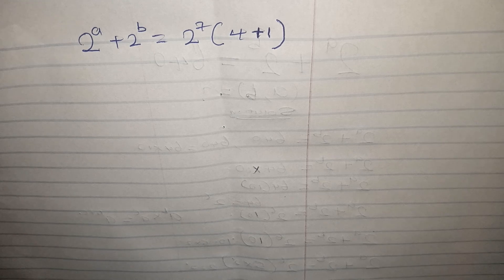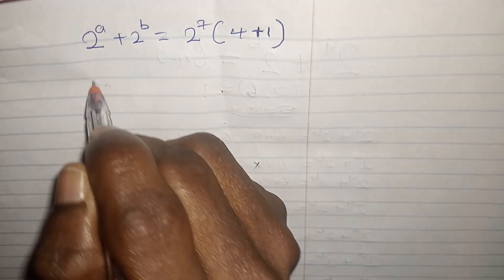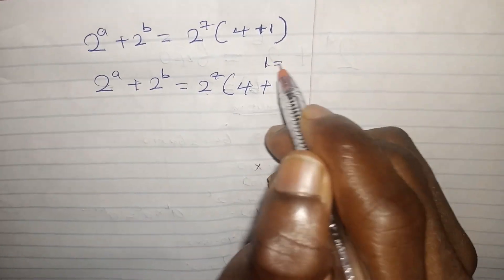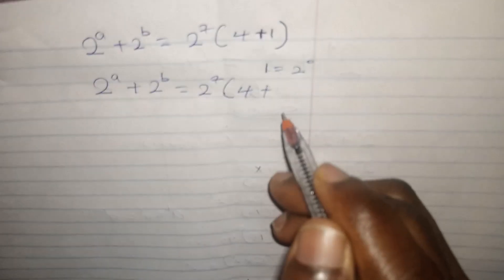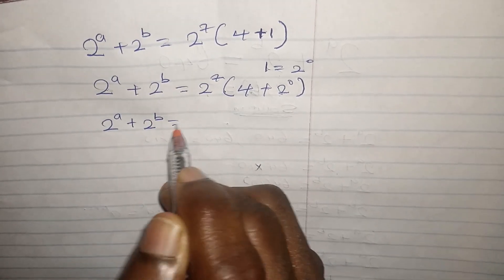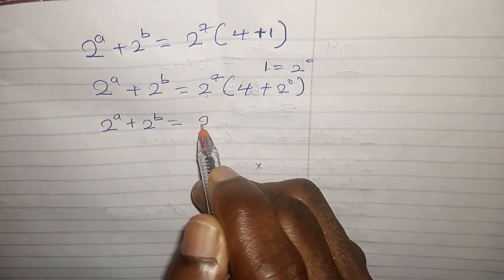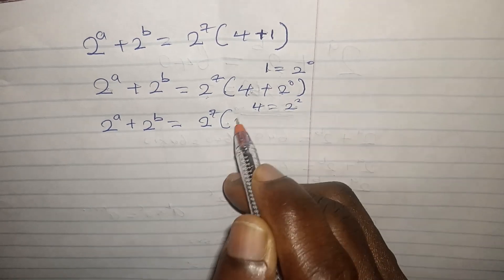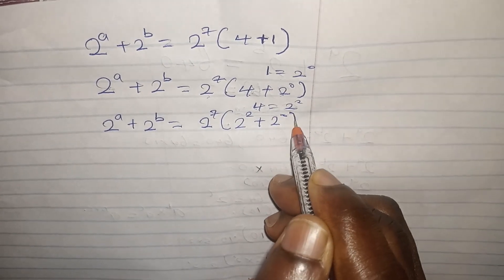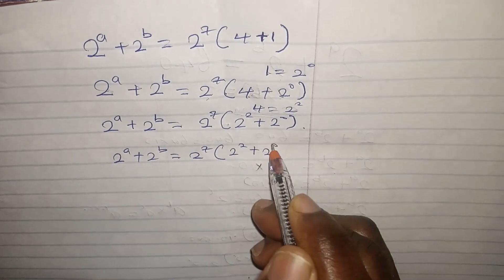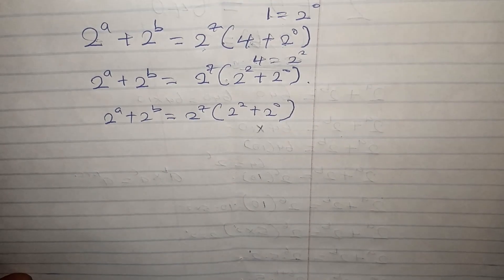So we have 2^a + 2^b = 2^7 × (4 + 1). Now, 4 is also equal to 2 to the power of 2, and 1 is equal to 2 to the power of 0. So we can write 2^7 × (2^2 + 2^0). We now have 2^a + 2^b = 2^7 × (2^2 + 2^0).